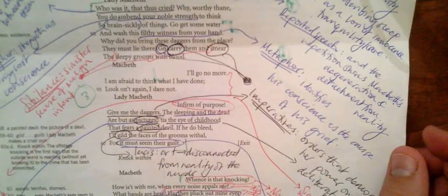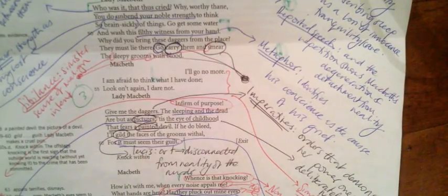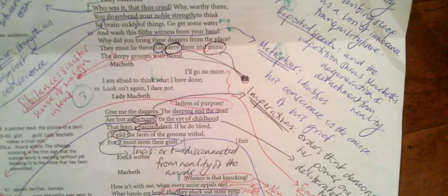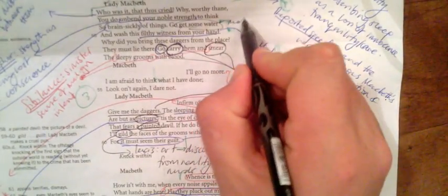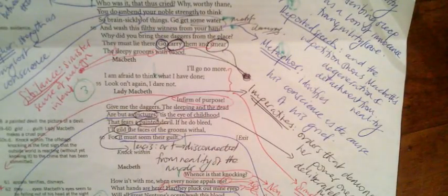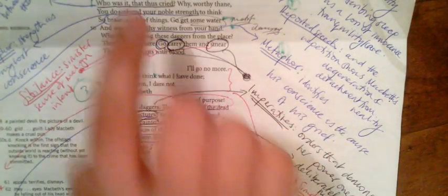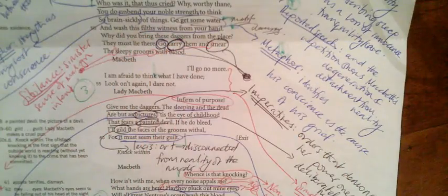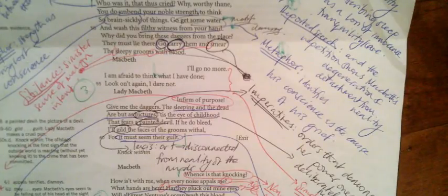She says 'Go get some water and wash this filthy witness from your hand.' On the first level, this is a clear order, but it captures the motif of cleansing that is important in the play. It's representing the blood on his hands as an actual witness that can see the nature of his crime, and it's that filthy witness that he is supposed to be washing away.